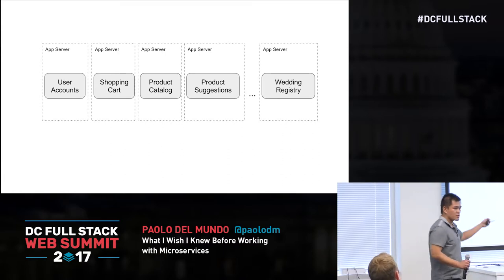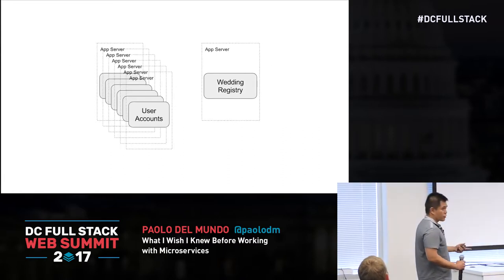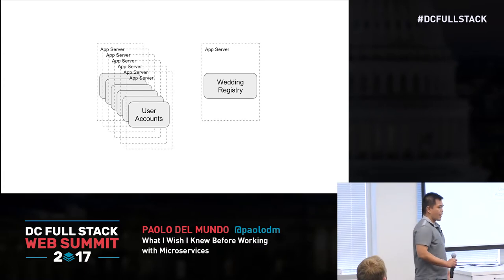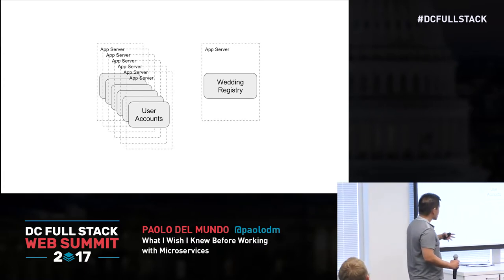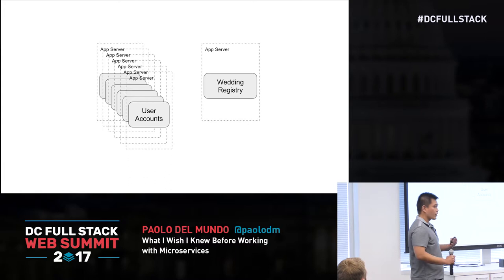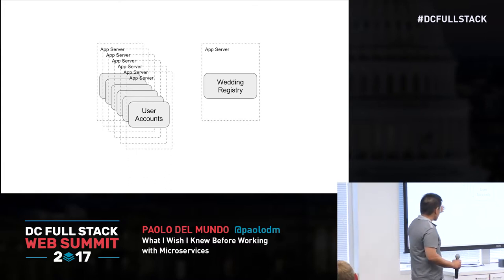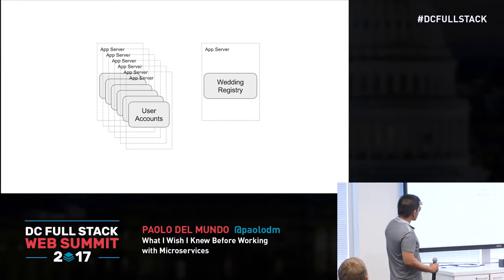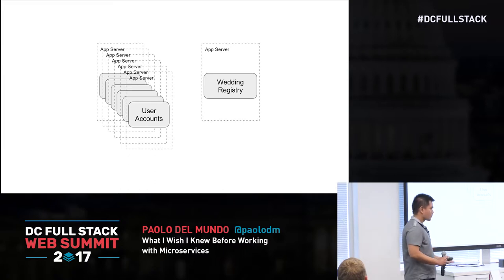Why would we want to do this? It's more complicated. Well, Christmas time comes around and your Amazon app is getting so much user activity. One of the ways you can scale in a microservice architecture is by putting all these user accounts onto different app servers, and you can handle the load just by simply adding another one.